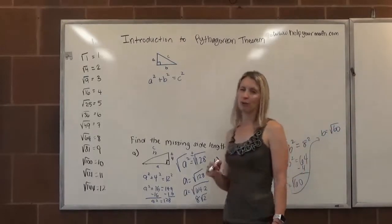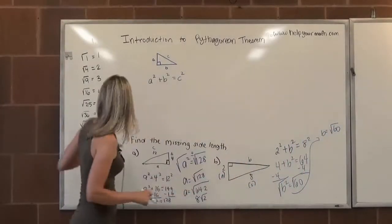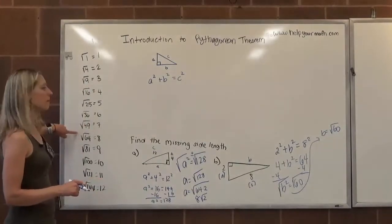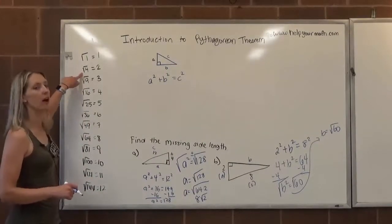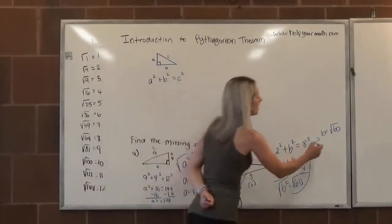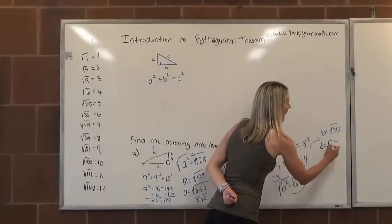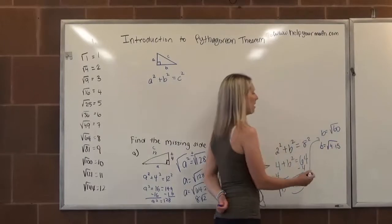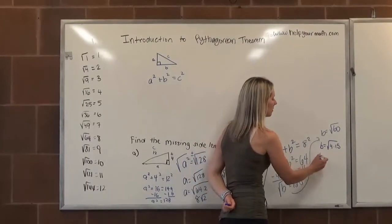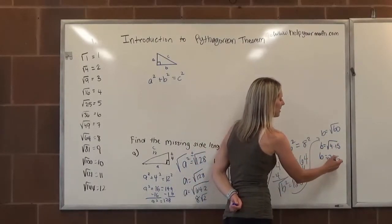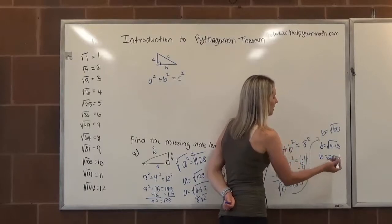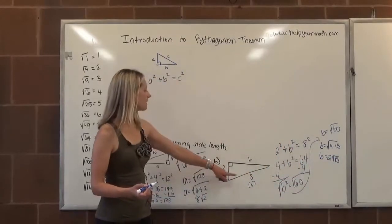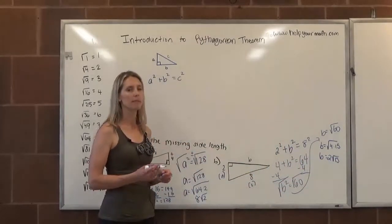We should simplify our answer if we can. Does 60 have any perfect square factors? It's not itself a perfect square, but it does have a perfect square factor of 4. We can rewrite 60 as 4 times 15. And then we can say the square root of 4 is 2. The square root of 15 is stuck as the square root of 15. So the missing side length here, the missing leg, has a length of 2 times the square root of 15.